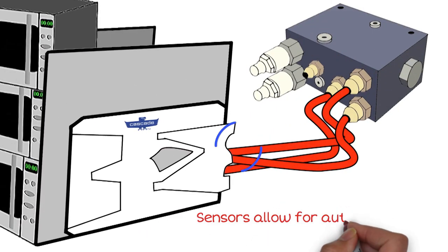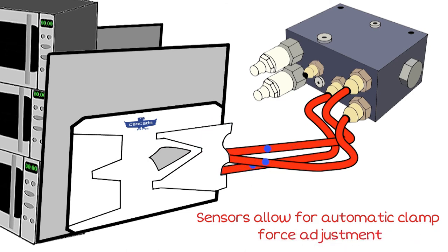A transducer in the hoist circuit identifies the pressure required to lift the load and sends a signal to the HFC valve, which adjusts clamp force accordingly.